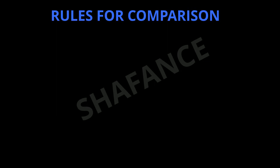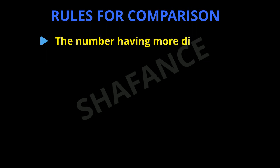The first rule is: the number having more digits is greater. As we have already seen in the counting video, the number which has more digits comes later on in the counting. So the number which comes later on in the counting is the greater number.